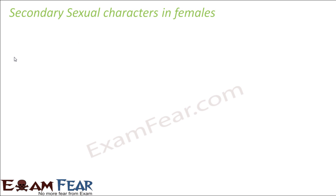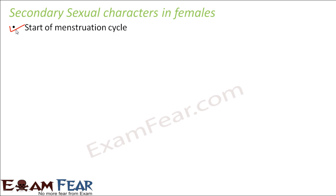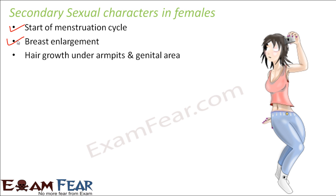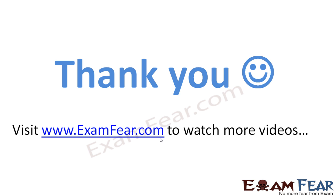Similarly, we have a set of secondary sexual characters in females. One is the start of the menstruation cycle — every month there will be bleeding through the vagina, and this process starts in females, which shows that she is female. Breast enlargement is also very noticeable externally. Additionally, there is hair growth under armpits and in the genital area.